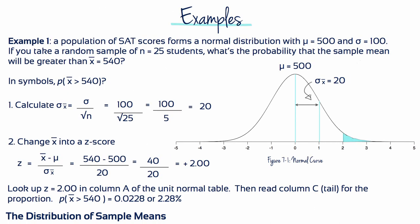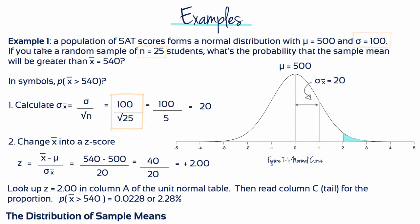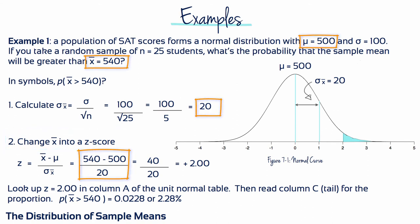Example 1: A population of SAT scores forms a normal distribution with a mean of 500 and a standard deviation of 100. If you take a random sample of n equals 25 students, what's the probability that the sample mean will be greater than 540? The first thing to do is calculate the standard error, which is the standard deviation divided by the square root of n: 100 divided by the square root of 25, which equals 20. We then change the sample mean into a z-score: 540 minus 500 divided by the standard error, which is 40 divided by 20, giving us a z-score of plus 2. Looking up the z-score of 2 in the unit normal table gives us a probability of 0.0228, or 2.28%.